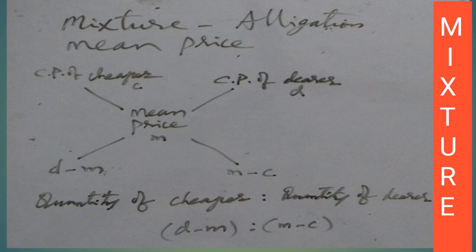Mean Price: The cost price of a unit quantity of the mixture is called the mean price. This involves a unit of costlier article and a unit of cheaper article.